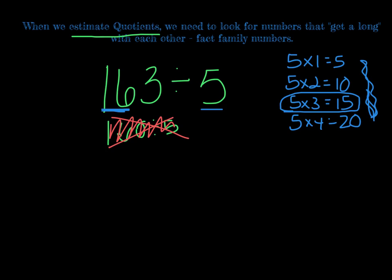So watch what I'm going to do: 16 is going to turn into a 15 and then my 3 up above here right there is just going to become a 0. So it's kind of like I rounded the number, but what I've done instead is I have found a number that gets along with the number 5 as far as fact family goes. We know now we can do this in our head.